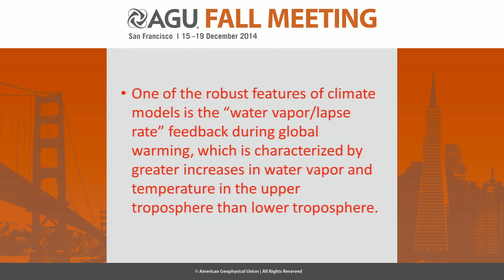One of the most robust features of the climate model is the so-called water vapor temperature lapse rate feedback. This feedback tends to give you higher water vapor concentration in the upper troposphere compared to lower troposphere, and also higher temperature perturbation in the upper troposphere compared to lower troposphere.